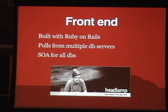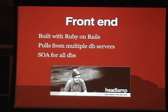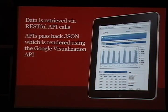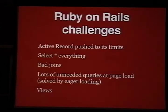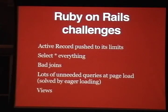The front end is actually written in Rails. We found we have so many different data sources that we started with ActiveRecord, but ActiveRecord just didn't work because of the different data sources. So we have SQL calls to all the databases. We built small Sinatra apps that return XML, and everything is passed back via JSON to Google Chart visualizations on the front end — it's an interesting interface.